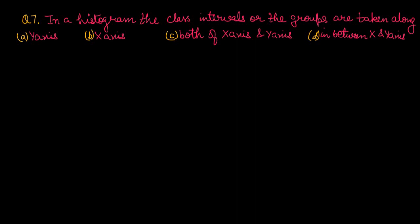Question number 7: In a histogram, the class intervals or groups are taken along — A) y-axis, B) x-axis, C) both x-axis and y-axis, or D) in between x and y-axis? In a histogram, class intervals and groups are taken horizontally, that is along the x-axis. Option number B is the right one.